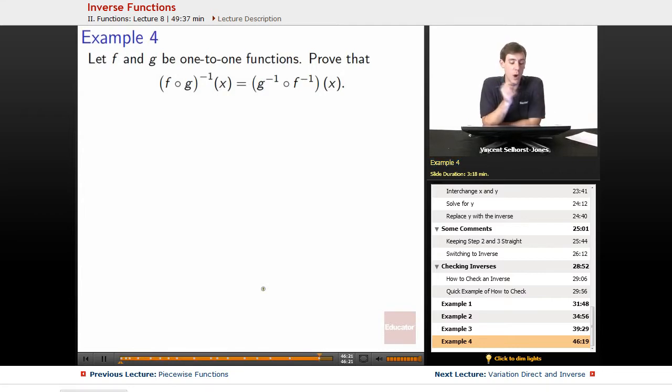For example, f and g are one-to-one functions. Now prove that (f∘g)^(-1) = g^(-1)∘f^(-1). So this might be a little daunting at first. These are weird symbols we're not used to using.